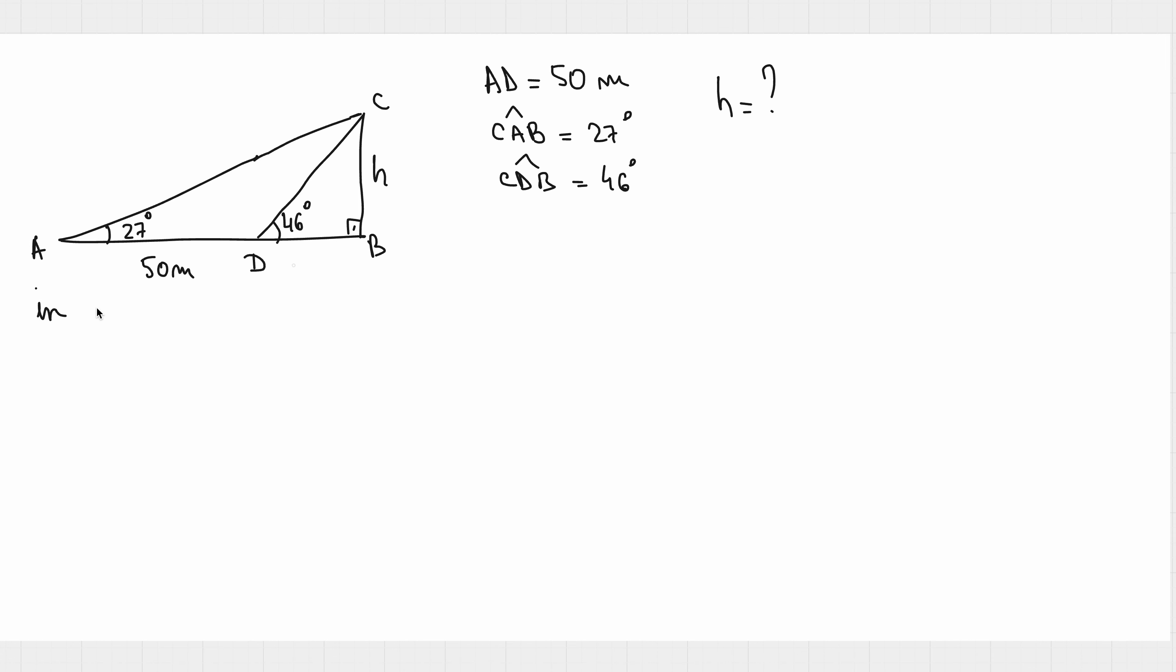In triangle ABC, we can write with the help of the sine rule that H over sine of A, so H over sine of 27 degrees, is the same thing as AB over sine of the angle ACB. So AB over sine of the angle ACB.